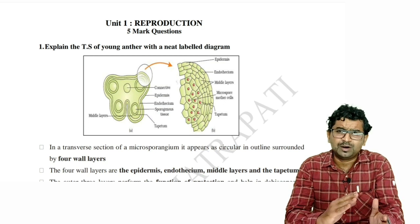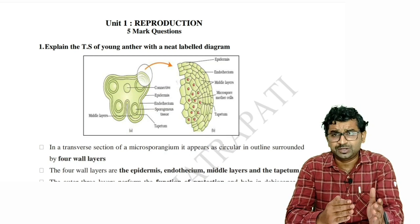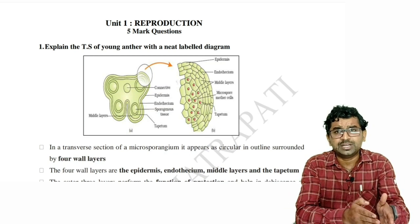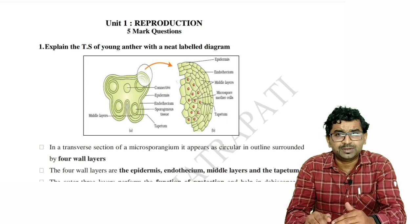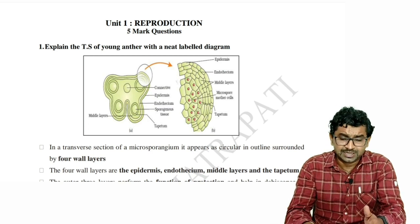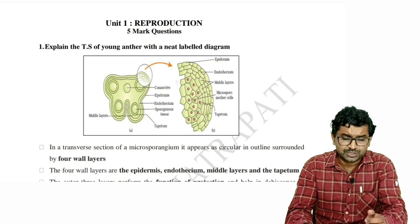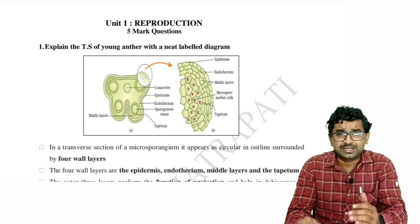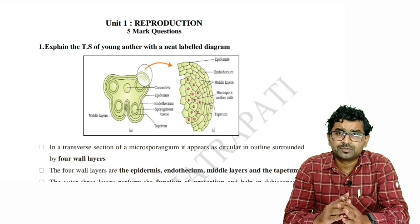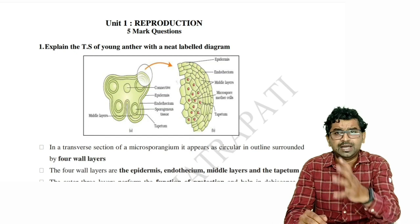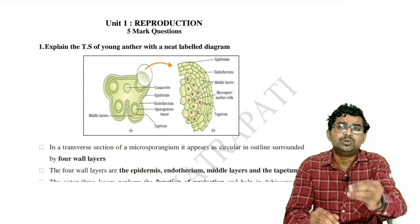Let us move forward. The first question — most asked, repeated questions. When you see old question papers right from 2014 to 2020 and start referring those questions, the same questions you can expect in this particular unit. So the first question you will note: Explain the TS of young anther with a neat labeled diagram. Always, I am going to tell you the important point — what students do. The common mistake.